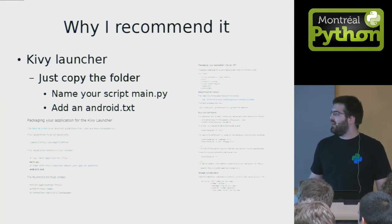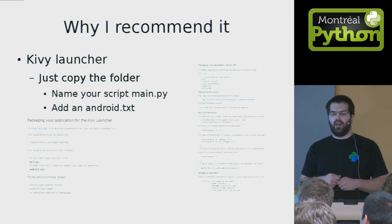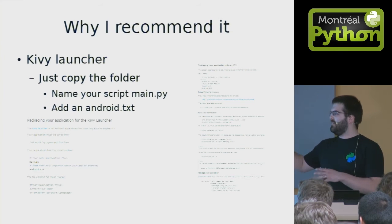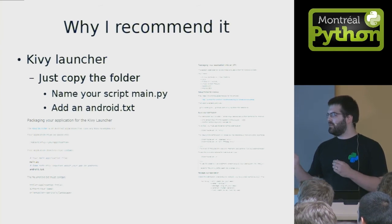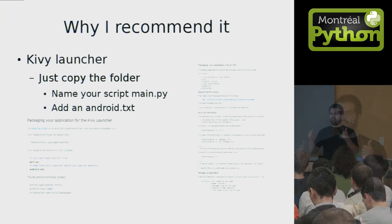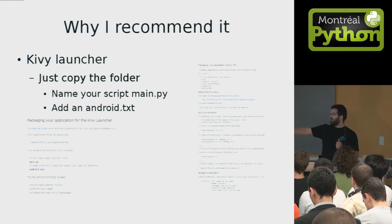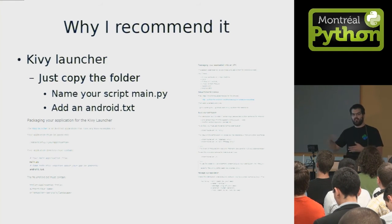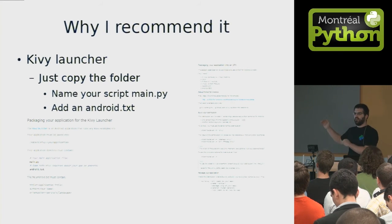I didn't create an APK yet, because the Kivy launcher is a Google app on Google Play. You just copy the folder somewhere, name your script 'main.py', add the Android metadata, and that's it — you run the application. On the left are all the instructions to use the Kivy launcher, and on the right is part of the instructions to create an APK.